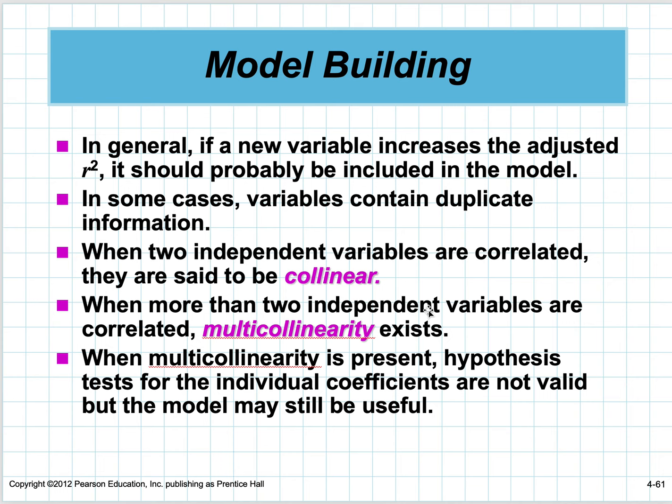We say two independent variables are collinear if they contain duplicate information—for instance, if you used x and 2x, they're related. Take one out. When more than two independent variables are correlated, multicollinearity exists. When it's present, hypothesis tests for individual coefficients are not valid, but the model may still be useful. For ease of calculation, we try to take collinear variables out.